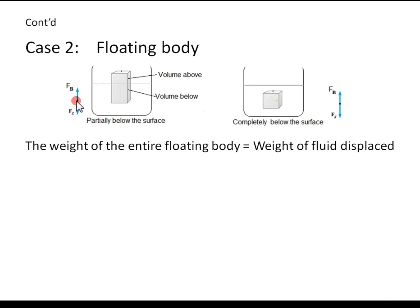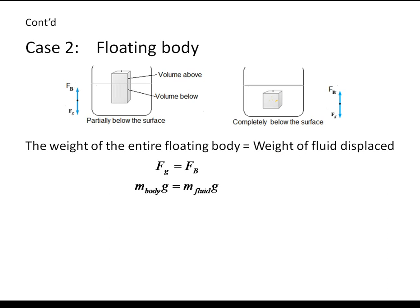If an object floats, the buoyant force it experiences must equal the gravitational force — there is no other force. The buoyant force and gravitational force are the same. So for floatation, according to the principle of floatation, the weight of the entire floating body must equal the weight of the displaced fluid. Fg equals Fb; replacing mass with density times volume, you get this expression.